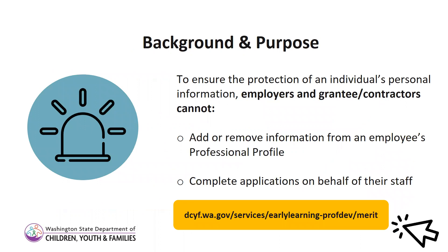One thing to note about this page is that to ensure the protection of an individual's personal information, employers cannot add or remove information from an employee's professional record. They also cannot complete applications on behalf of their staff. Merit is where individuals create a personalized professional record, and that record travels with them throughout their career, so it is truly owned by that individual. To learn more about how to access the Facility Site Details page or how to complete the application, please visit our Merit Workforce Registry webpage linked here.